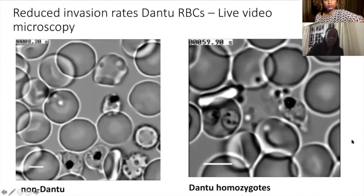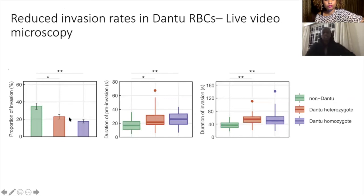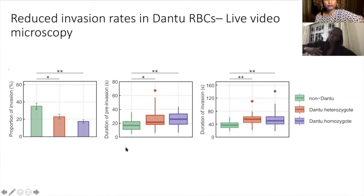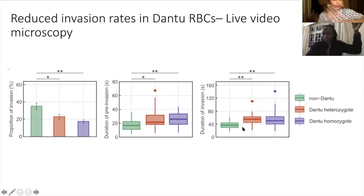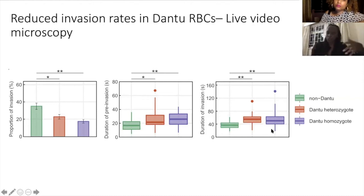With live video microscopy using 3D7, we saw the same results as with flow cytometry: a decrease in the ability of 3D7 to invade DANTU heterozygous and homozygous individuals. We were also able to time the process of invasion. The duration of time spent by the parasite pre-invasion was much higher in DANTU cells, and for parasites that were able to invade, the time from beginning to end of invasion was much longer. The parasites are clearly struggling more to gain entry into the red blood cells.